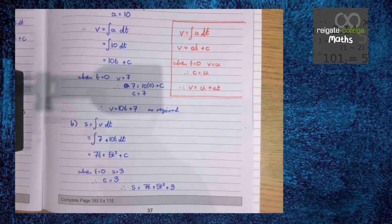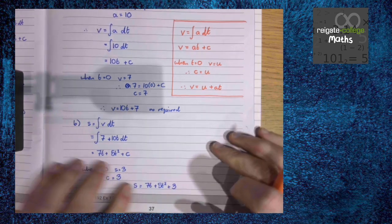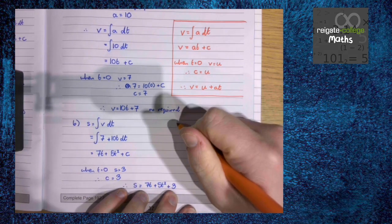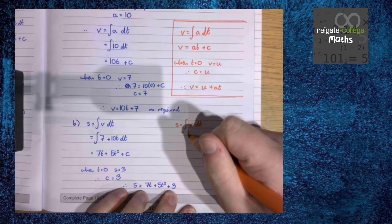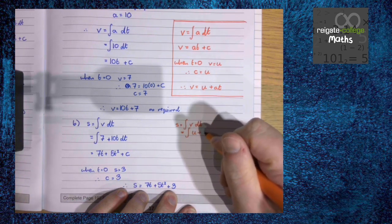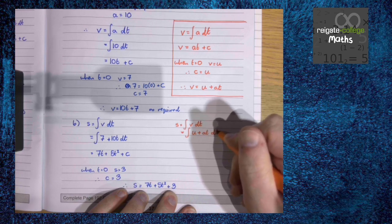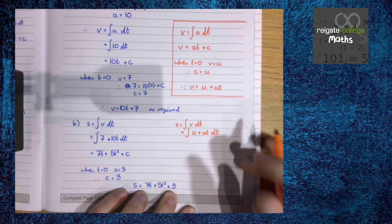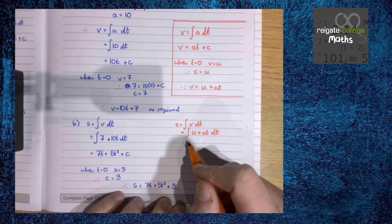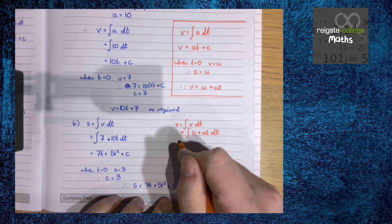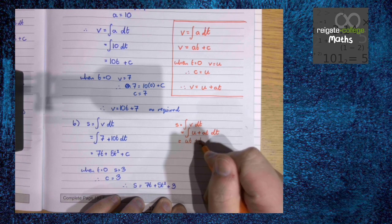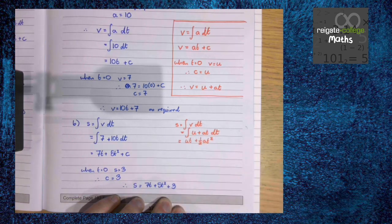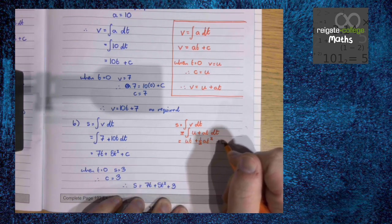Again, we could use this method to derive one of the SUVAT equations. We know s is the integral of v, and so we know it's the integral of u plus at. Integrating gives us ut plus half at squared, which is the SUVAT equation we've been dealing with, plus c.